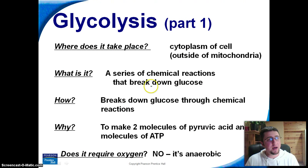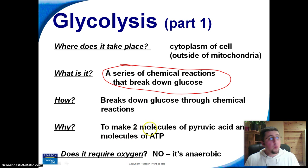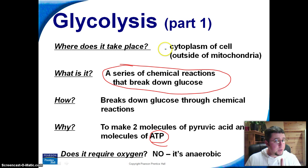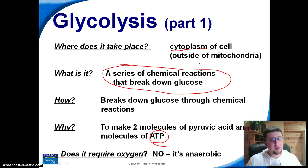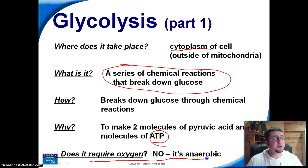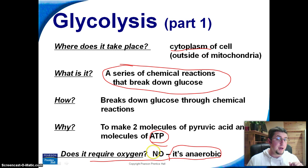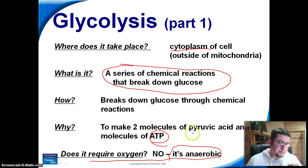Glycolysis is a series of chemical reactions that break down glucose. We get two ATP out of that reaction. One really important thing to know about glycolysis is that it occurs in the cytoplasm and has nothing to do with mitochondria at this point. Another important thing to know is that it does not require oxygen — this would happen without oxygen being present. So even if you couldn't breathe, your cells would still go through glycolysis. You wouldn't get very much energy out of it — again, you only get two ATP — but you're still going to get a little bit of energy.